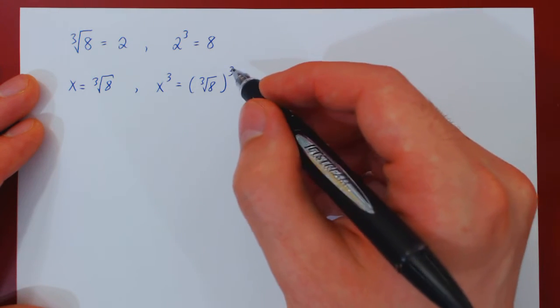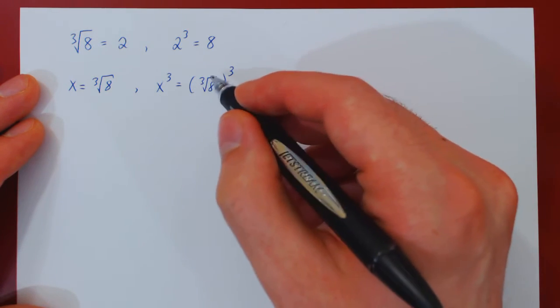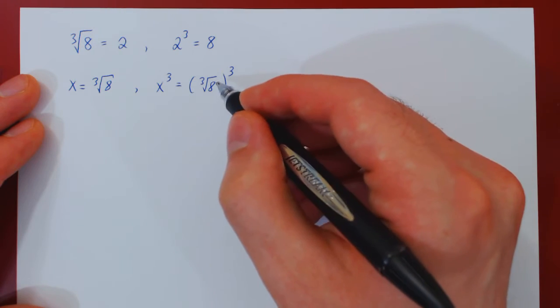And now there's two ways to view this. By definition, the cube is the inverse of the cube root. So these will cancel, and you'll be left with 8.